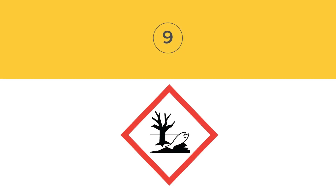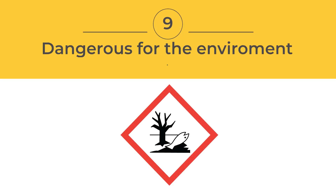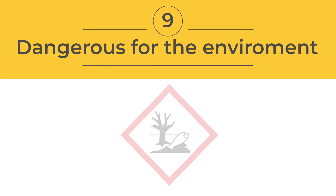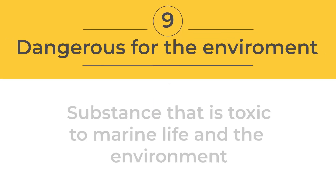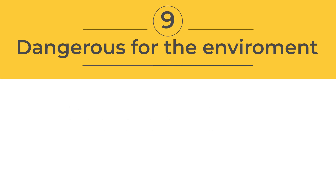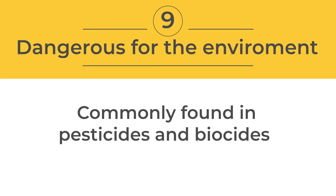The dangerous for the environment symbol shows a dead tree and fish, and is used to label a substance that could be toxic to marine life and the wider environment. It is commonly found in pesticides and biocides.